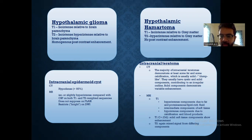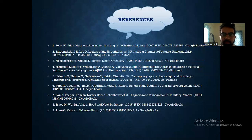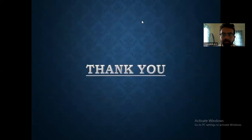Solid components demonstrate variable attenuation. On MRI T1, it shows hyperintense components due to fat and proteinaceous or lipid-rich fluid, intermediate components of soft tissue, and hypointense components due to calcifications and blood products. On contrast, it shows contrast enhancement. On T2, it gives a mixed signal. These are the references. Thank you.